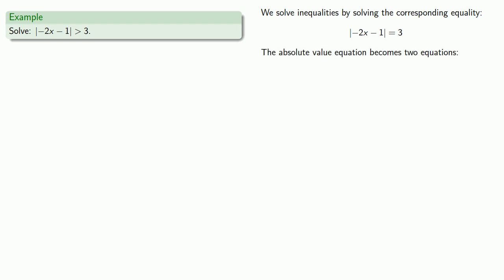Remember, the absolute value equation becomes two equations: minus 2x minus 1 equals 3, and minus 2x minus 1 equals negative 3.